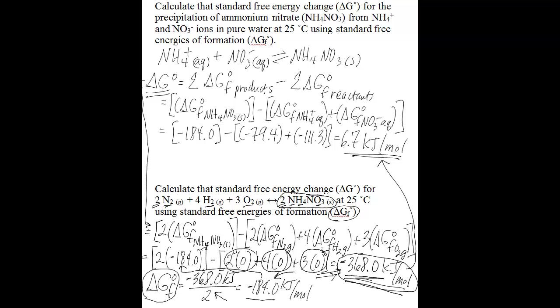So a standard free energy of formation value of zero indicates that that is an element in its most stable form. In summary, delta GF naught, or the standard free energy of formation, is defined for one mole of a substance and for when that substance is formed from the most stable forms of its constituent elements. The most stable forms of elements have delta G of formation values of zero — and that's the difference between the delta G value calculated for the first problem and the delta G value calculated for the second problem.